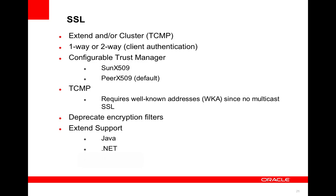There's also a configurable trust manager. By default that's the Peer X509. You can also use the Sun one, or write your own — this is regular Java SSL, not some peculiarity of Coherence. The Peer trust manager checks that a certificate is available on both the peer and client side. For TCMP, you have to use well-known addresses because there is no such thing as multicast SSL — it must be point-to-point SSL.